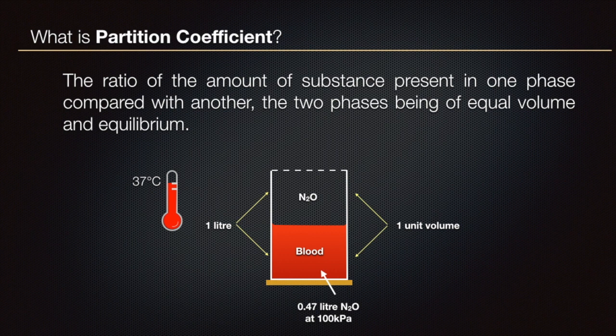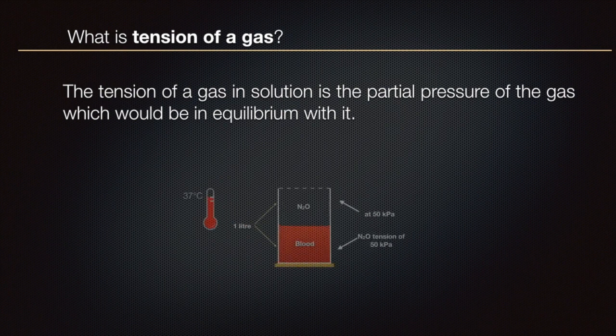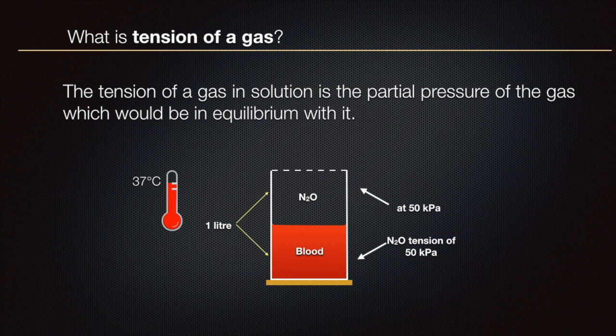The blood-gas partition coefficient for nitrous oxide is 0.47. If required, kindly pause the video to understand the concept and proceed. What is tension of a gas? The word tension is often used in place of partial pressure for gases in solution. The tension of a gas in solution is the partial pressure of the gas which would be in equilibrium with it. For example, the partial pressure of nitrous oxide in the gaseous phase above blood is 50 kilopascals; when in equilibrium, the tension of nitrous oxide in the blood is also 50 kilopascals.